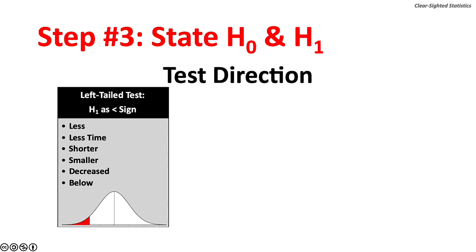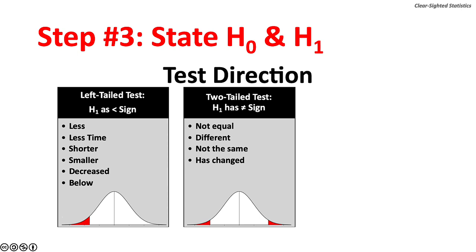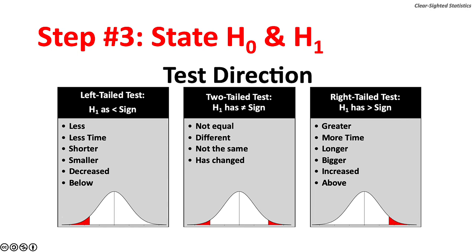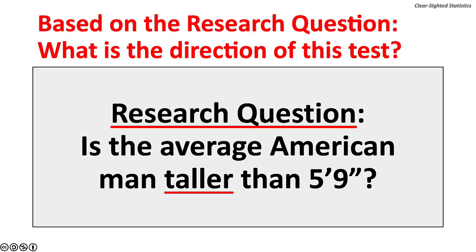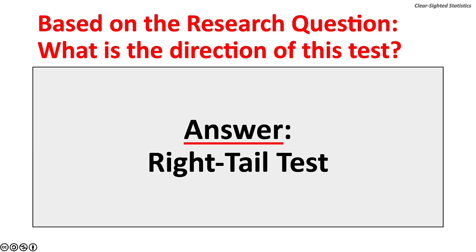Step 3: The Hypothesis and Test Direction. Stating the null and alternate hypothesis requires understanding the direction of the test, which is found in the research question. With a left-tailed test, the alternate hypothesis takes a less-than sign — keywords include less, shorter, smaller, decreased, or below. With a two-tailed test, the alternate hypothesis takes a not-equal sign — keywords include different, not-the-same, or has-changed. With a right-tailed test, the alternate hypothesis takes a greater-than sign — keywords include greater, longer, bigger, or above. Based on the research question 'Is the average American man taller than 5'9'?', this is a right-tailed test — the word 'taller' is a big clue.